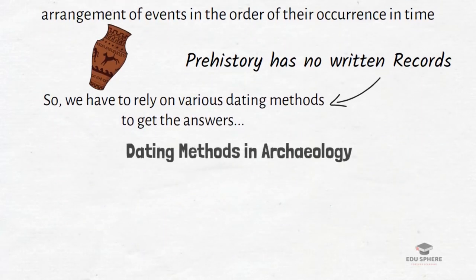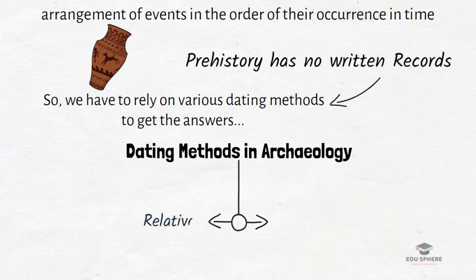Let us discuss how the different dating methods are categorized. All the dating methods today can be grouped into one of the following two categories: Relative and Absolute dating. Absolute dating is also known as chronometric dating.